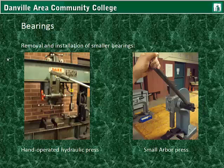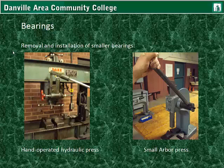Removal and installation of smaller bearings usually requires a hand-operated press in cases where the bearings are not held within a cassette, as they are sometimes pressed in. A hydraulic press may remove them, or a simple arbor press.